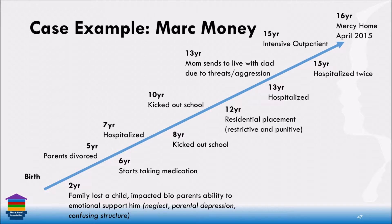By six years old, his parents had already sought out outpatient services and he was already taking medication for ADHD. By seven years old, he'd already had his first psychiatric hospitalization. At eight years old he was kicked out of school. At ten years old, kicked out of school again. At twelve years old, he was placed in his first residential treatment center. This treatment center was restrictive and punitive — he's described it as having to wear scrubs, a lack of ability to really show any self-identity. It was a locked facility with a lot less ability to express yourself than we have here at Mercy. He has reported this as a very negative experience in his life.